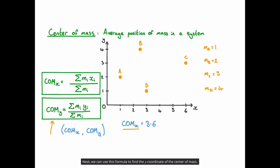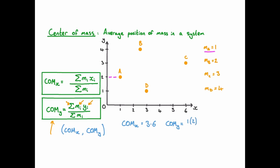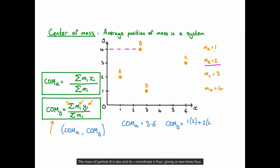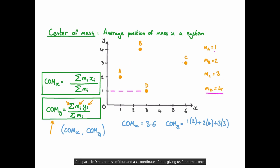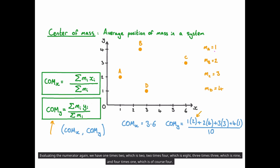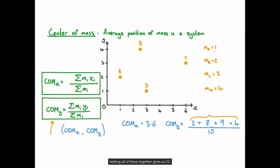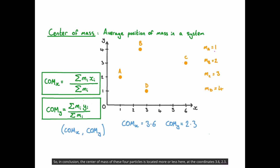Next we use the formula to find the y-coordinate of the centre of mass. We sum the mass of each particle multiplied by its y-coordinate. Particle A has a mass of 1 and a y-coordinate of 2, giving 1 times 2. Particle B has a mass of 2 and a y-coordinate of 4, giving 2 times 4. Particle C has a mass of 3 and a y-coordinate of 3, giving 3 times 3. And particle D has a mass of 4 and a y-coordinate of 1, giving 4 times 1. We divide all of this by the sum of the masses, which is 10. Evaluating the numerator: 2, 8, 9, and 4, which sum to 23. So the y-coordinate of the centre of mass is 23 over 10, or 2.3. The centre of mass of these four particles is located at coordinates 3.6, 2.3.